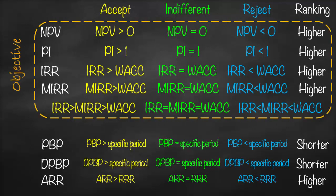We can say that NPV, Profitability Index, IRR, and MIRR are objective measures. What I mean by objective measures is that they have a fixed benchmark for the decision rule. For example, NPV is always compared against zero, Profitability Index against one, and IRR and MIRR against WACC. Therefore, whenever NPV is greater than zero, PI will be greater than one, IRR and MIRR will both be greater than WACC, and IRR will be greater than MIRR. The same logic applies for the indifferent decision: if NPV equals zero, PI must equal one, IRR must equal WACC, MIRR must equal WACC, and IRR must equal MIRR must equal WACC.